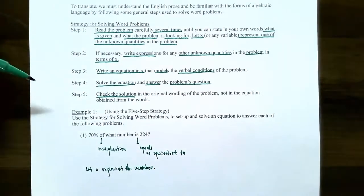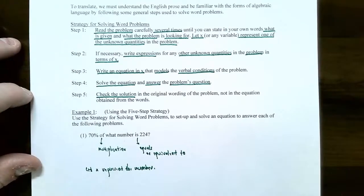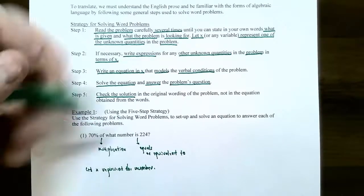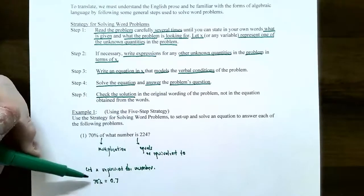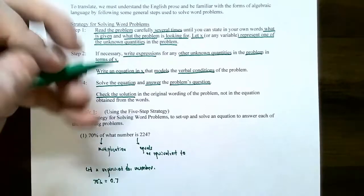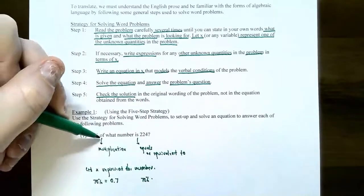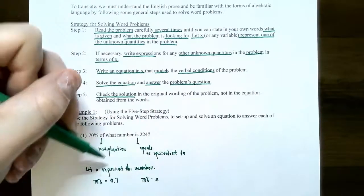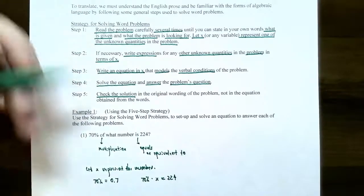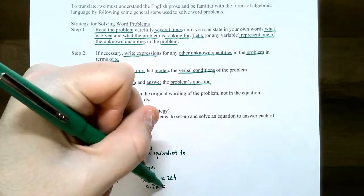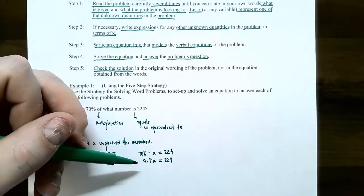There are no other unknowns in the problem, so we skip step two and go to step three — the most important step — which is to write an equation. 70% can be represented as the decimal 0.7, since you change a percent to a decimal by dividing by 100. So '70% of what number is 224' becomes 0.7 times x equals 224. This is the key step: setting up this linear equation to solve for x.